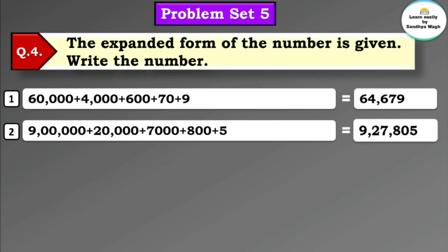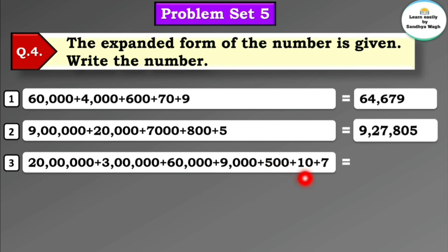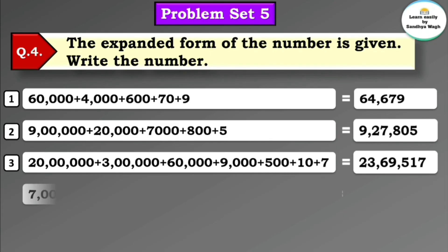Next expanded form: 20 lakh + 3 lakh + 60,000 + 9,000 + 500 + 10 + 7. Each place is mentioned: 10 lakhs place, lakhs place, 10,000 place, 1,000 place, 100 place, 10s place, and units place. So the number is 23,69,517.